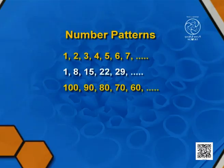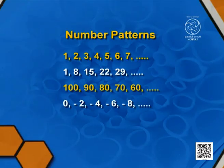The third pattern starts from 100, then the second term is 90 — it is reducing. Minus 10 is added to each term, so the common difference is minus 10. The next pattern starts from 0; the second term is minus 2 and the third term is minus 4, so the common difference is minus 2.